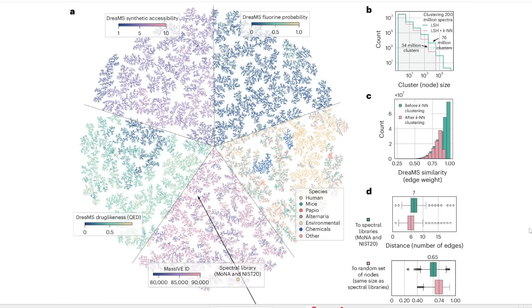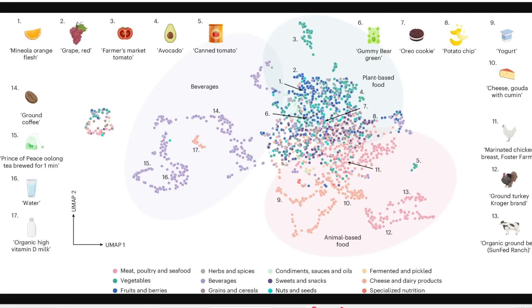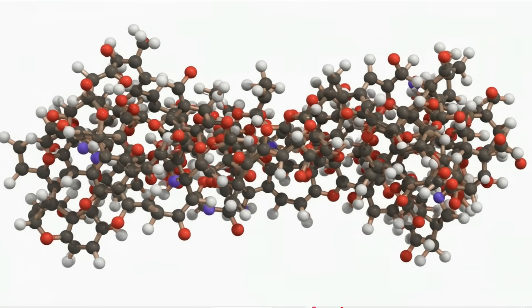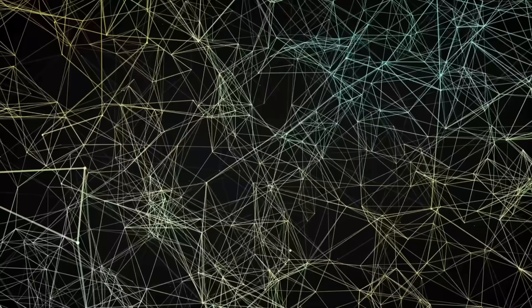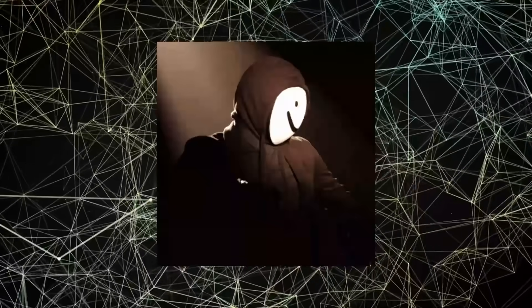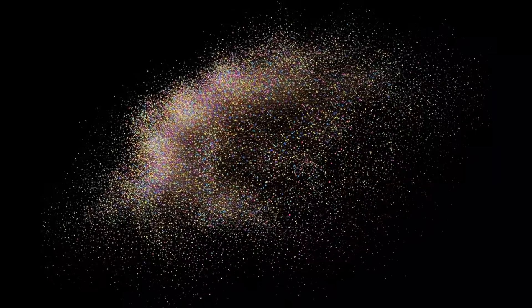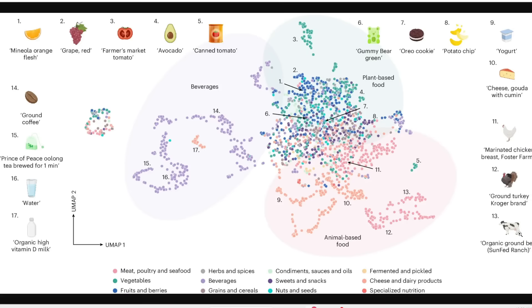Now, again, everything I've said so far is quite theoretical. So let's actually go over some real examples of what atlas was used for. So here, the researchers took a ton of different and diverse food items like oranges, grapes, tomatoes, avocados, ground coffee, water, milk, potato chips, Oreo cookies, chicken, turkey, ground beef, etc. And they broke all these down into molecules and then used that liquid chromatography technique to fragment the molecules into spectra. The spectra were then plugged through this Dreams AI and plotted on this network graph.